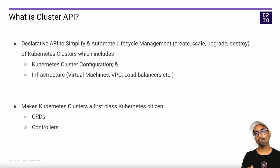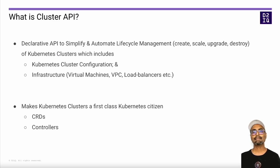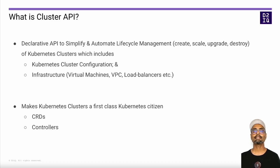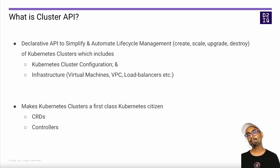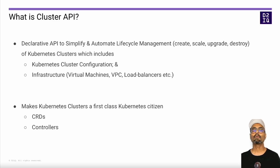CAPI leverages the well-known custom resource definitions and controller model to make Kubernetes cluster lifecycle management a first-class Kubernetes citizen. It enables you to create reusable declarative templates of your cluster specifications and also stores currently deployed specs and their current state. In most cases, it allows you to update the cluster by just making changes to the existing specs, thus simplifying the process of building and managing multiple clusters.